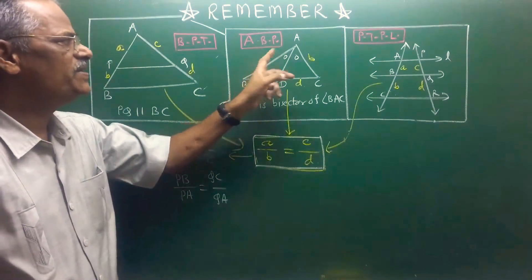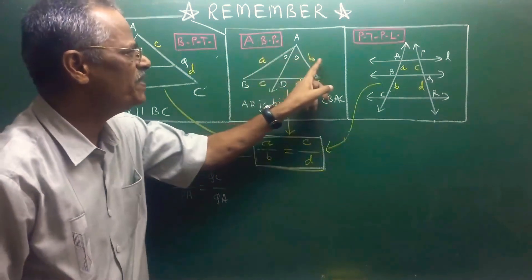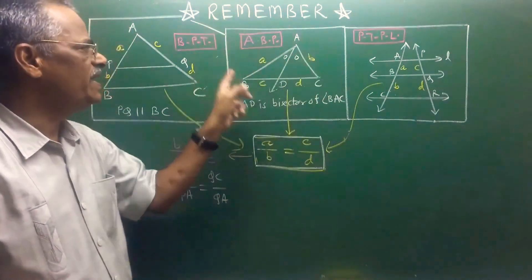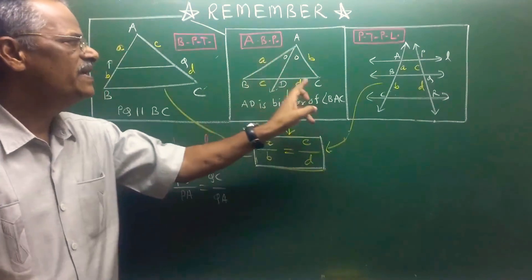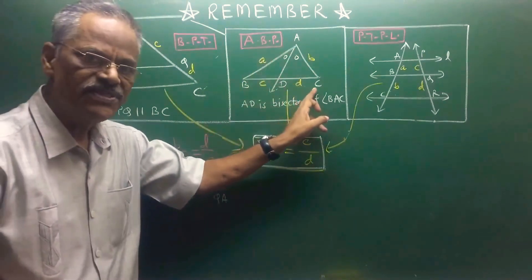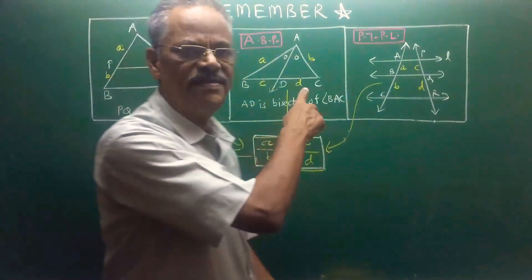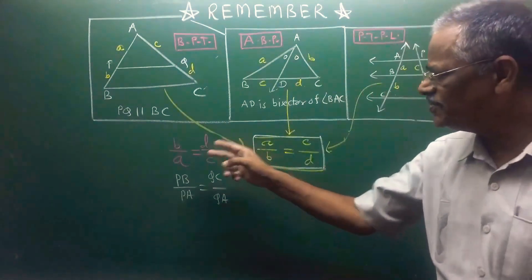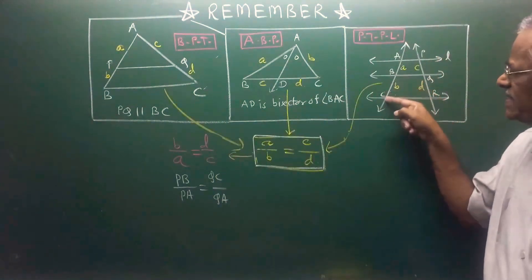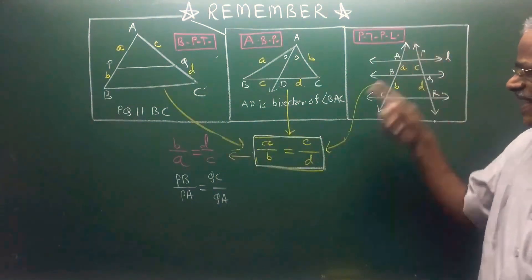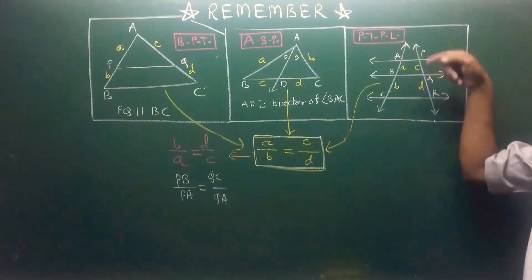Here also we can use the same result. Instead of A upon B, if you take B upon A, it will be AC upon AB is equal to CD upon DB. And in the third property, if we use this invertendo, that is BC upon BA is equal to QR upon QB.